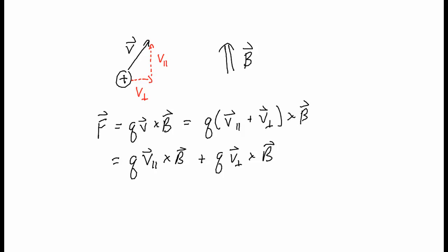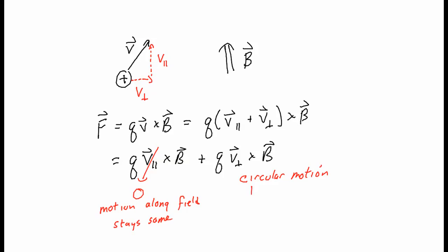So I've got Q V_parallel cross B plus Q V_perp cross B. This first term is equal to zero because V_parallel points in the same direction as B — if you take two vectors which point in the same direction and take the cross product, you get zero. So the motion along the field stays the same. This term, Q V_perp cross B, is just going to give circular motion perpendicular to B.